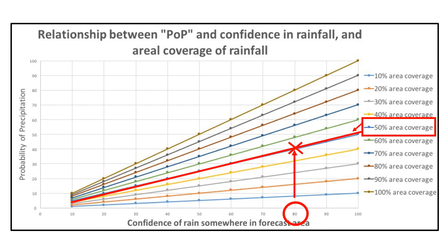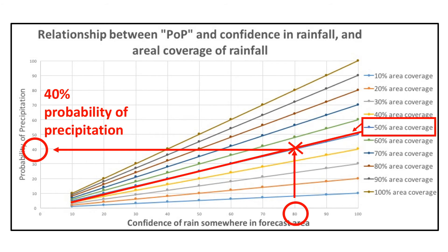The POP would then be 0.8 — which is 80% confidence — times 0.5 — which is 50% aerial coverage — giving a 40% POP, or 40% chance of rain. So whenever you read 40% chance of rain, you can translate this as there is a 40% chance that rain will fall anywhere in Northeast Ohio, not just Cleveland.